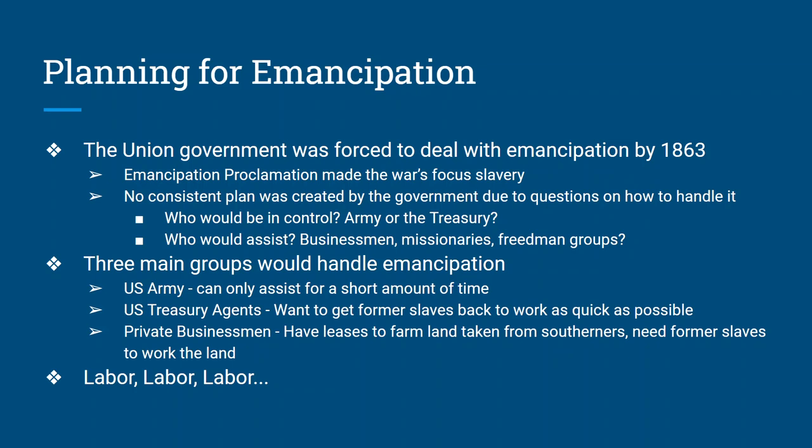One group was the Union Army. They could only help for so long because they only kept enough supplies for the army — a little food to give away, a tent, a blanket, and then they said here you go, wait for somebody else to come. There were also US Treasury agents who, because they were dealing with money, wanted to get former slaves back to work as quickly as possible. And then there were private businessmen who had gained leases on farmland and needed these former slaves to work the land. So it was all about labor — how to get the most labor and make the most money from these former slaves.